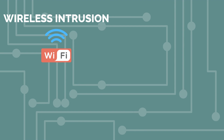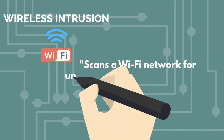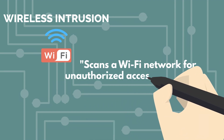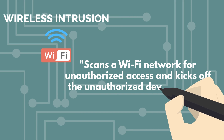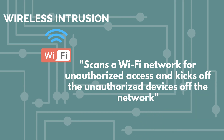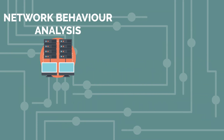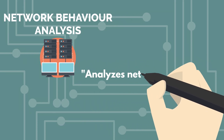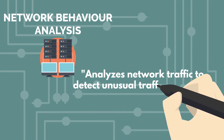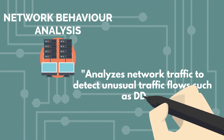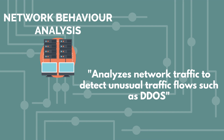Wireless intrusion prevention system simply scans a Wi-Fi network for unauthorized access and kicks off the unauthorized device from the network. Network behavior analysis analyzes network traffic to detect unusual traffic flow, such as DDoS.